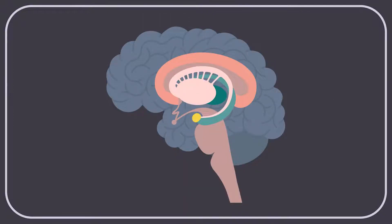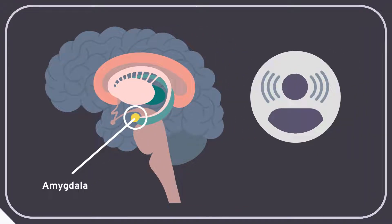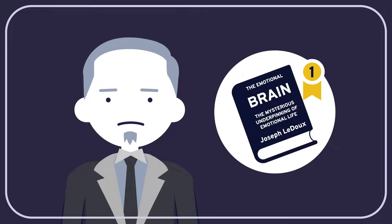The prevailing view is that fear stems from the amygdala, an almond-shaped cluster of cells in the temporal lobe that detects the emotional salience of things. A lot of this has to do with the pioneering work done by the neuroscientist Joseph Ledoux.